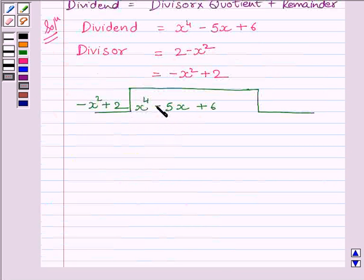As we can see, the first term of our dividend is x raised to the power 4. So to get this term, we will multiply the divisor with minus x squared. Multiplying divisor with minus x squared, we get x raised to the power 4 minus 2x squared.